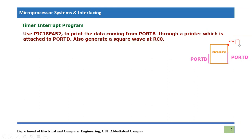RC0 is the pin where we will generate the square wave. Basically there are two tasks to implement. If we were not using interrupt programming, we would perform polling — we have done this example earlier — but in this lecture we will use interrupts. We will use the timer to generate a square wave, and Port B to Port D is a simple task we can perform in the main program.